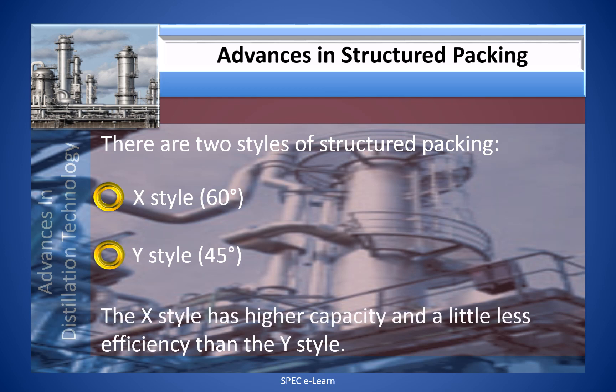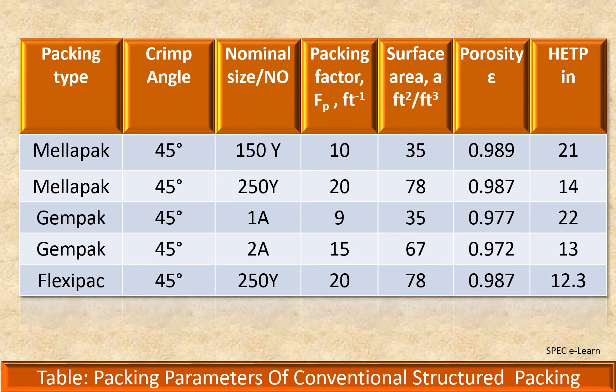This table shows packing parameters of some conventional structured packings used in the industry, provided for Y-type packing with crimp angle 45 degrees. The important packing parameters are packing factor Fp, surface area of the packing, porosity, and HETP. Packing factor Fp is related to pressure drop — as the number increases, surface area and pressure drop increase and HETP decreases. Lower HETP means higher efficiency.